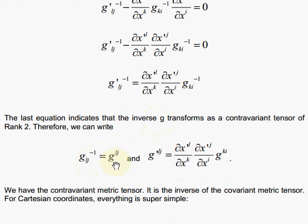So we can write it like this. G super LJ is the inverse of the metric tensor.